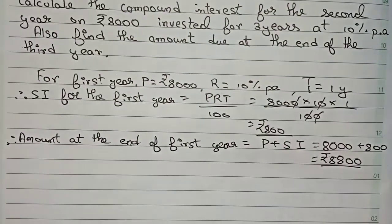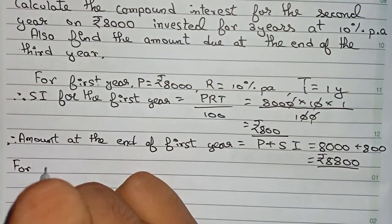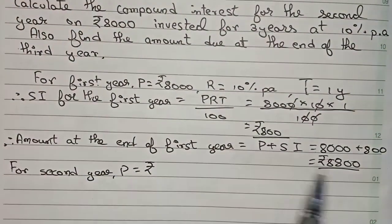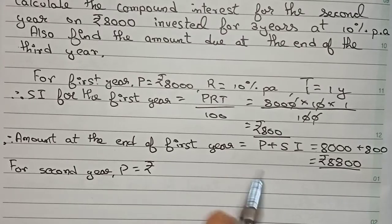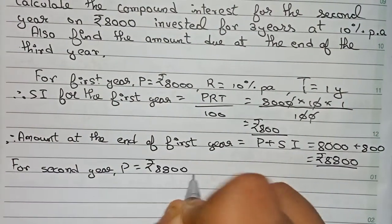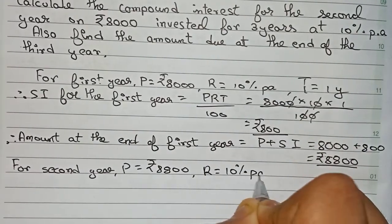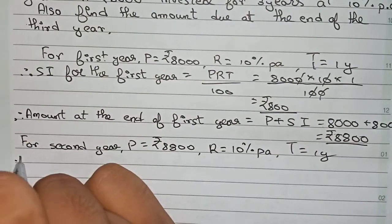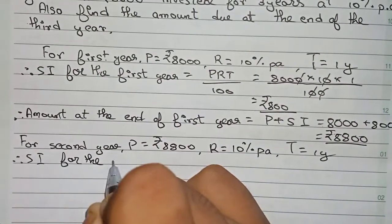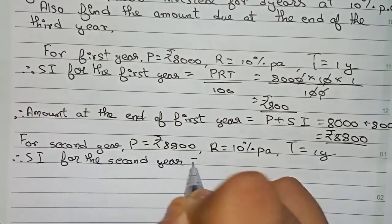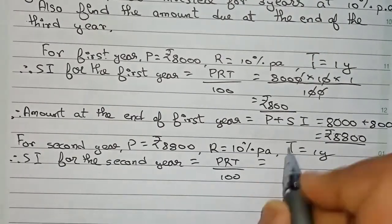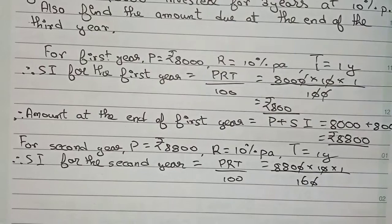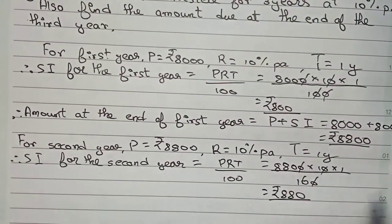Now for the second year: the principal becomes the amount at the end of the first year, which is rupees 8800. Rate remains 10 percent per annum and time is one year. SI for the second year = 8800 × 10 × 1 / 100 = rupees 880.